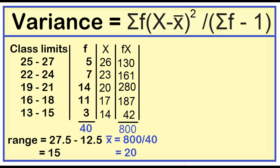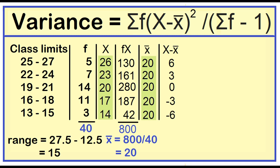Let's add a column for the sample mean so that we can easily subtract it from the class mark. Let's add a column also for the deviation from the mean. 26 minus 20 is 6. 23 minus 20 is 3. 20 minus 20 is 0. 17 minus 20 is negative 3. 14 minus 20 is negative 6.